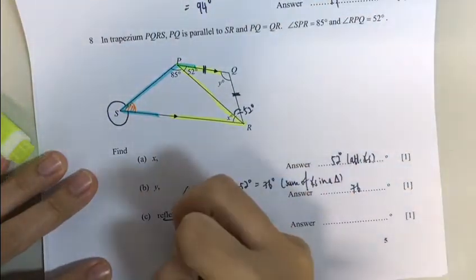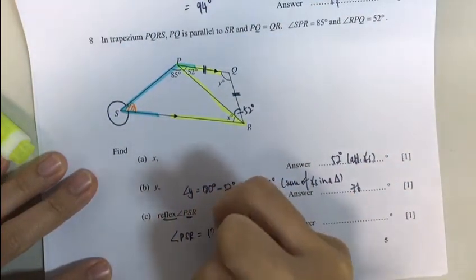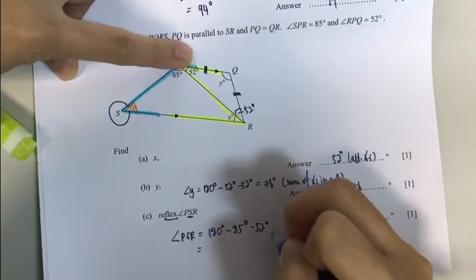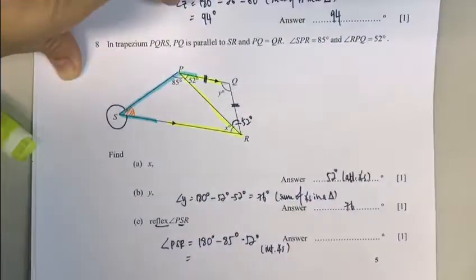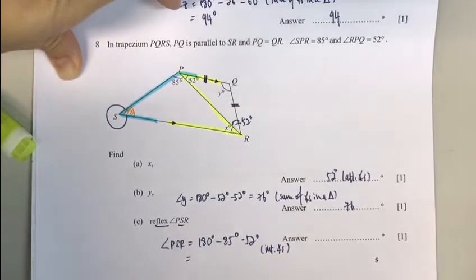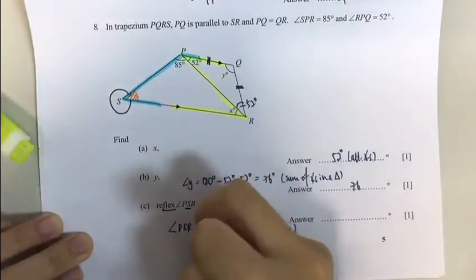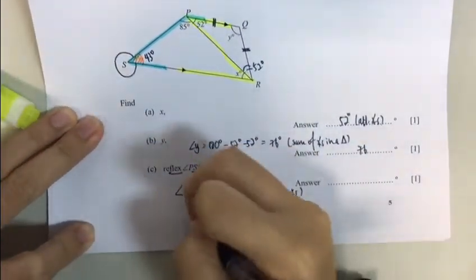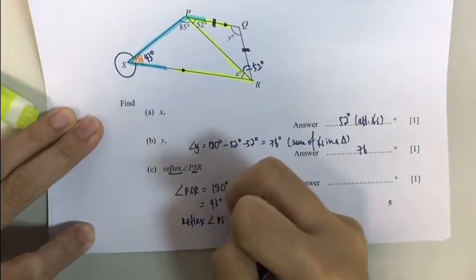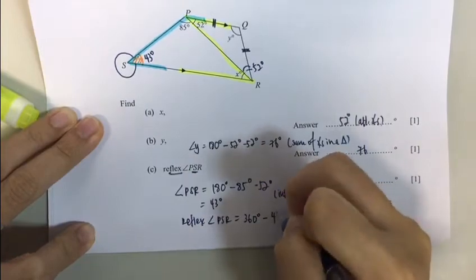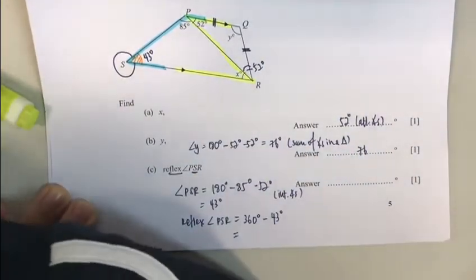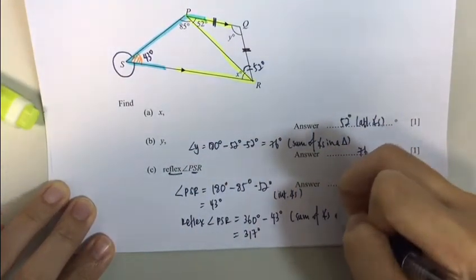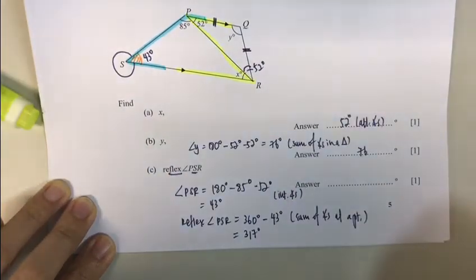Angle PSR is 180 minus 85 minus 52. I'm using Captain Planet. That gives me 43. So now I know that this is 43. How do I find it? Reflex. So reflex of it would be 360 take away 43. That will give me 317 degrees. Sum of angles at a point. Alright?